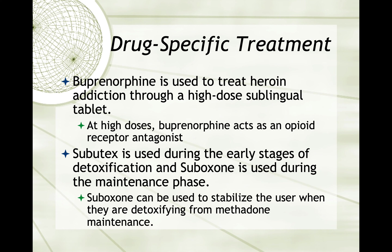Buprenorphine is used to treat heroin addiction through a high-dose sublingual tablet. At high doses, buprenorphine acts as an opioid receptor antagonist. Subutex is used during the early stages of detoxification, and Suboxone is used during the maintenance phase. Suboxone can be used to stabilize the user when they are detoxifying from methadone maintenance.